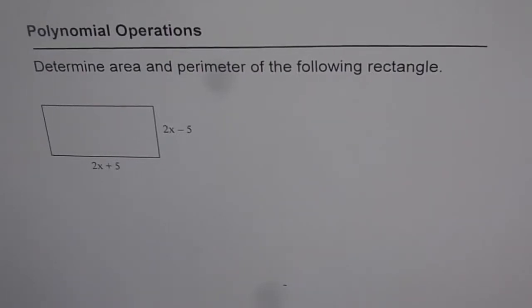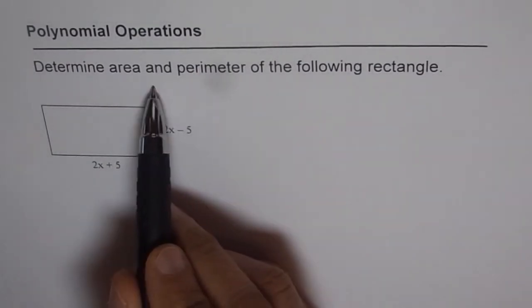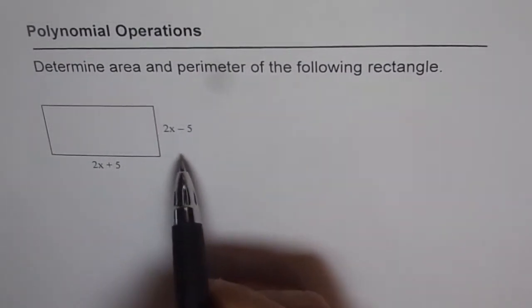So here are some practice problems for polynomial operations. We have a couple of geometrical figures and we will find area and perimeter of these figures and thereby practice how to do polynomial operations, basically multiplication, addition, and subtraction operations. So here we have a rectangular block and we need to determine area and perimeter of the given rectangle.